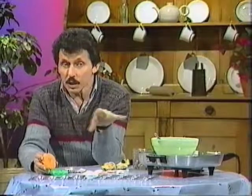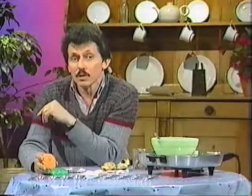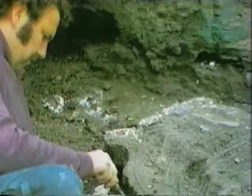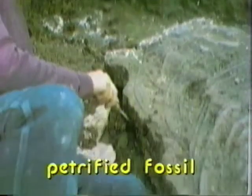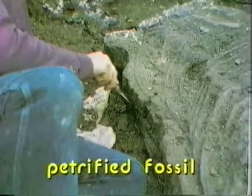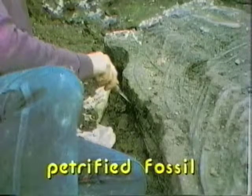Sometimes as the original material dissolves or decays away it's replaced bit by bit by rock. This is called a petrified fossil. Occasionally you'll find huge trees that have become petrified or turned into rock. Here's a tree trunk in the petrified forest in the United States of America — a very impressive fossil indeed.